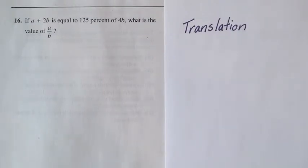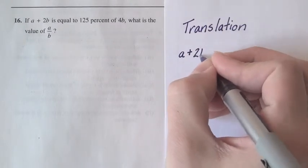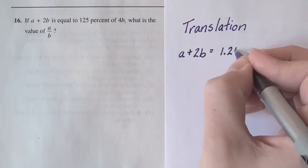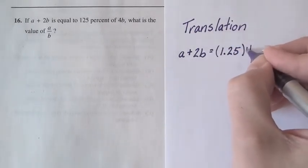To solve this problem, we'll have to translate the problem into a mathematical equation. So we'll have a plus 2b is equal to 125% or 1.25 times 4b.